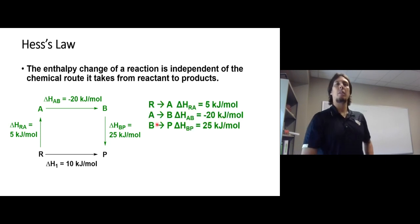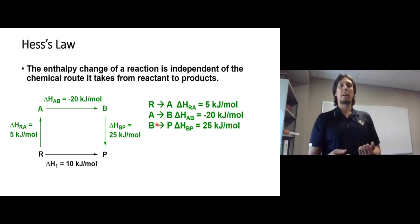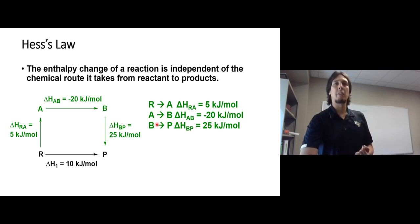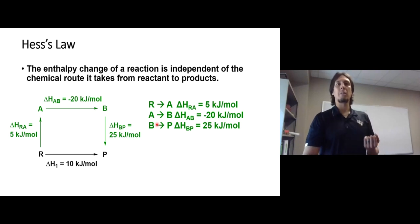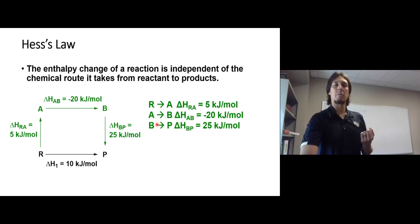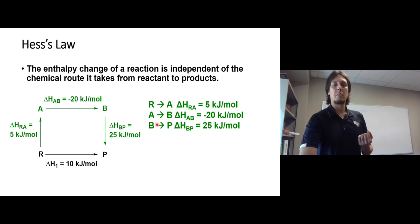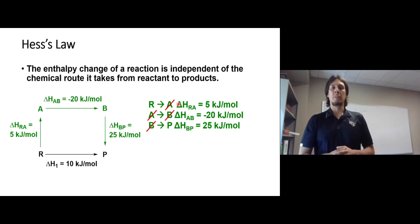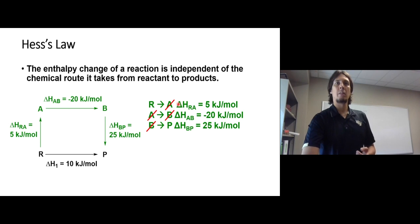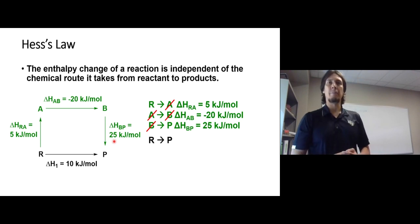We can see this more clearly by writing out the reactions: R to A, A to B, and B to P with their corresponding enthalpy changes. To get the overall balanced reaction, we cross out intermediates — molecules that are products of one reaction and reactants of the next. A and B get crossed out, leaving R on the reactant side and P on the product side, giving an overall reaction stoichiometry of R to P.